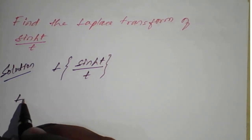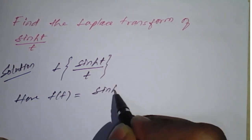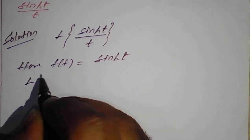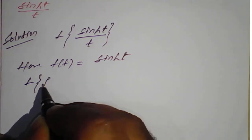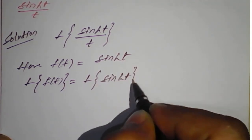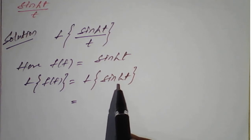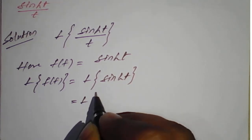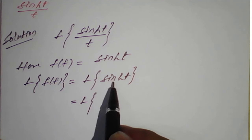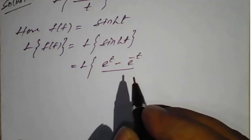First, we identify F(t). Our F(t) is sinh(t). We take the Laplace operator on both sides, so Laplace of F(t) equals Laplace of sinh(t). We simplify first: sinh(t) is nothing but (e^t − e^(−t)) / 2.